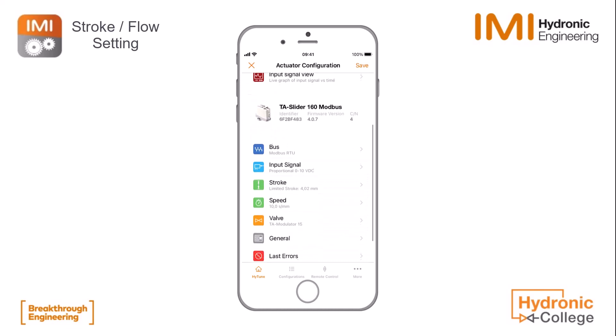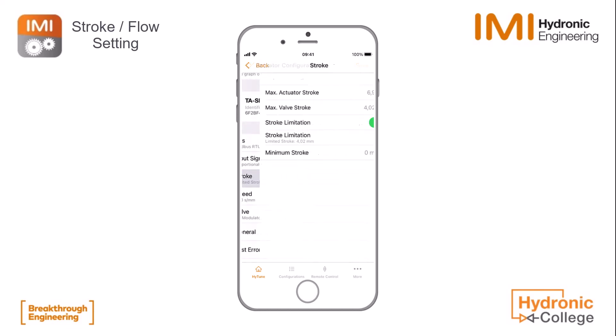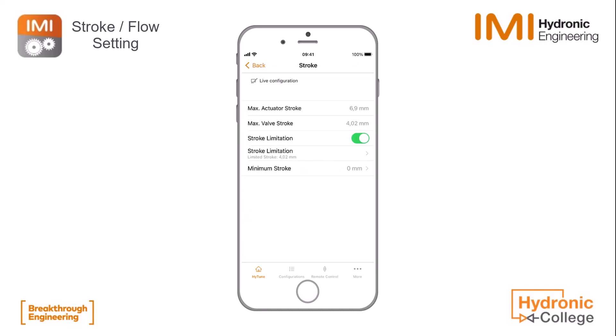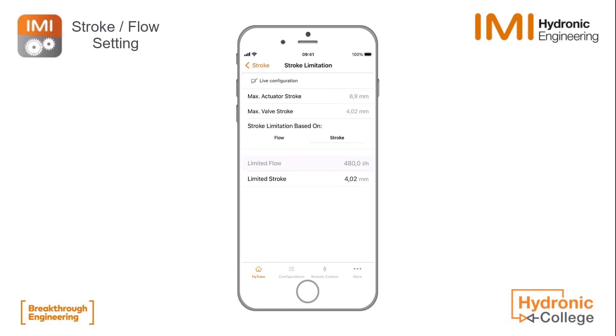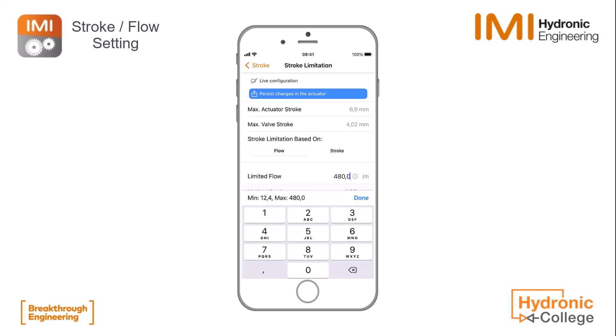Now we can set our stroke limitations. We go into Stroke and you see the limited stroke is at the moment 4.02 millimeters, and the stroke limitation is already on. The only thing we have to do is set the correct stroke limitation. We click on Stroke Limitation — the fourth option. You see that we are currently presetting on Stroke, but as we have set the correct valve, we can also limit on Flow, as Hytune knows which setting corresponds to which flow.